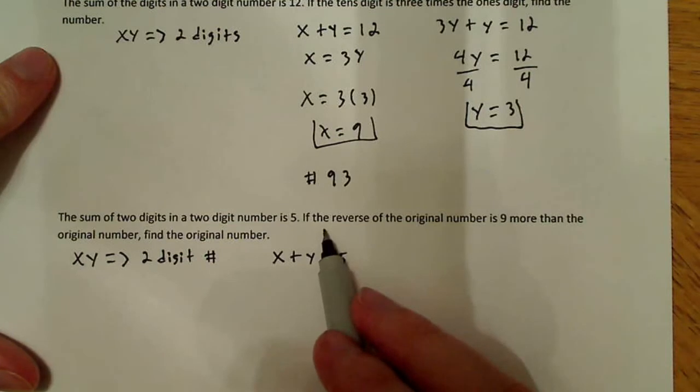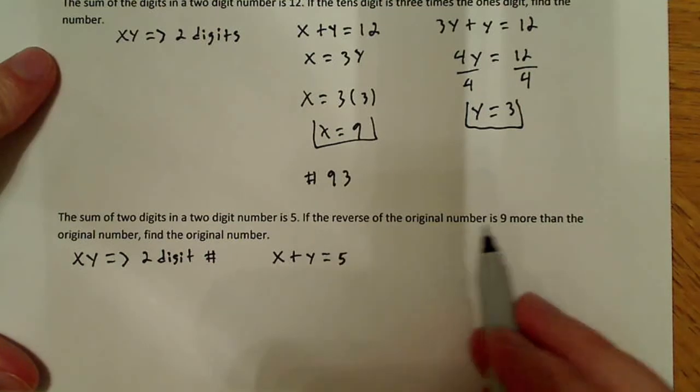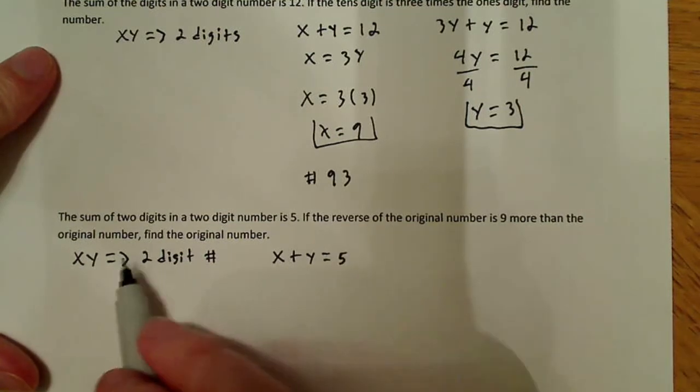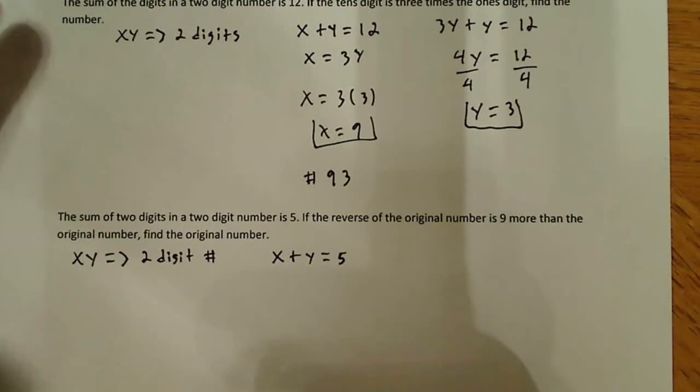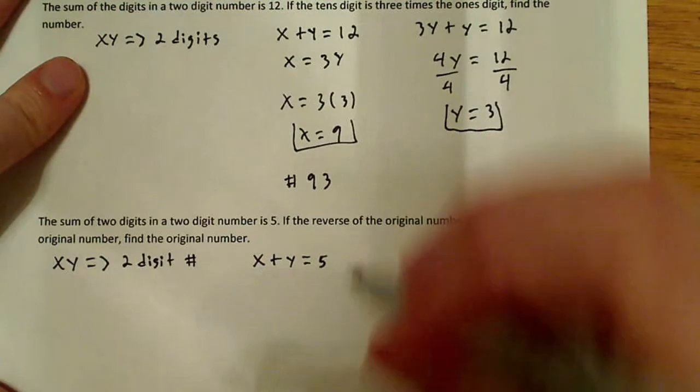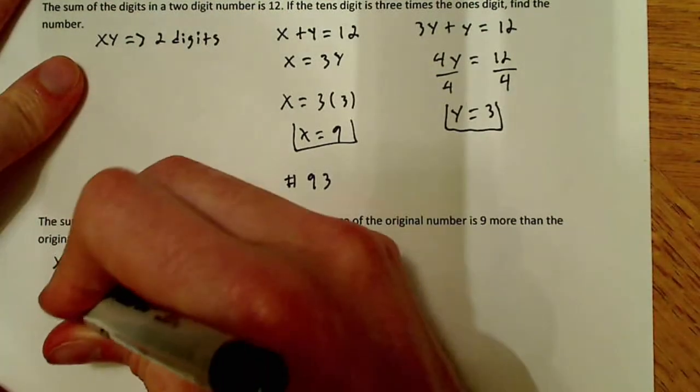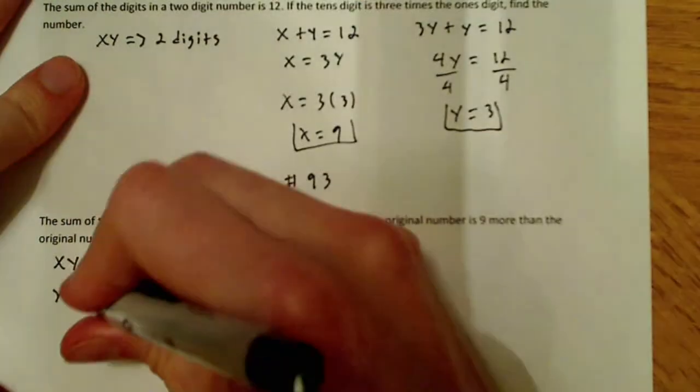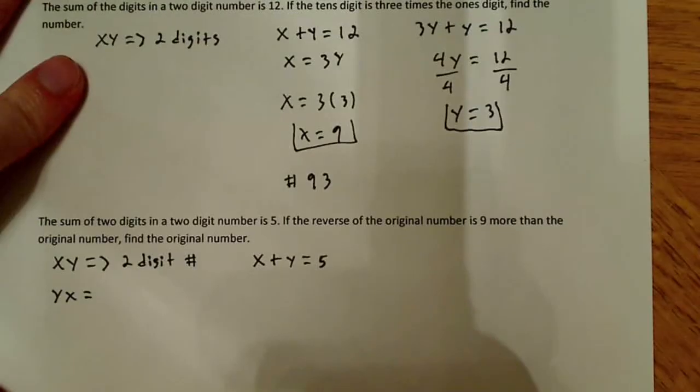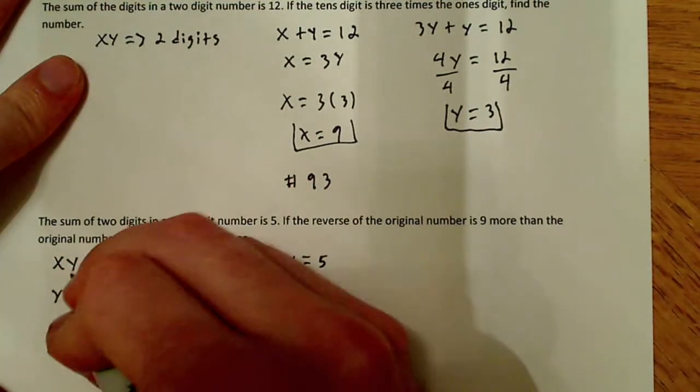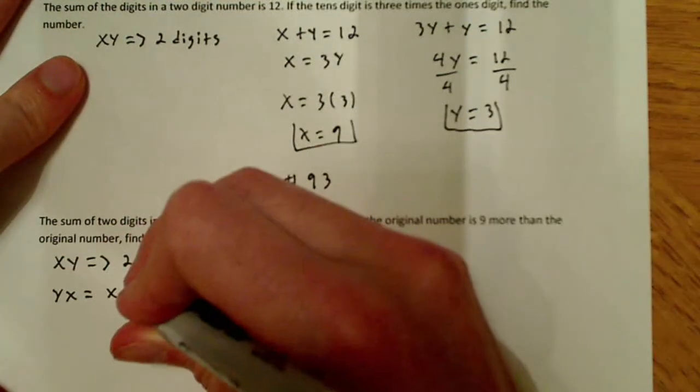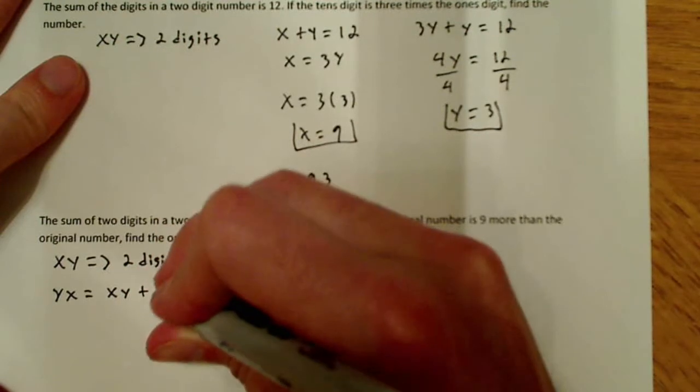Now it says something a little different. If the reverse of the original number is 9 more than the original number, find the original number. So the reverse, what's the reverse of x, y? The reverse is simply y, x. And they're telling us that equals 9 more than the original number. So the original number is x, y. So this winds up being x, y plus 9.